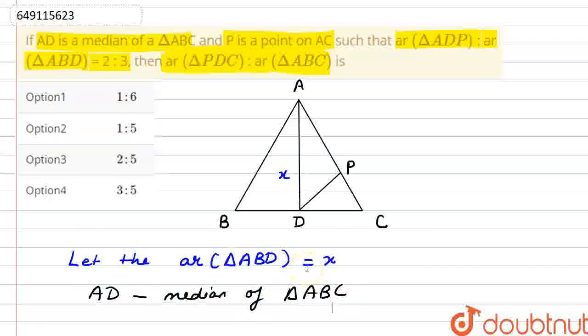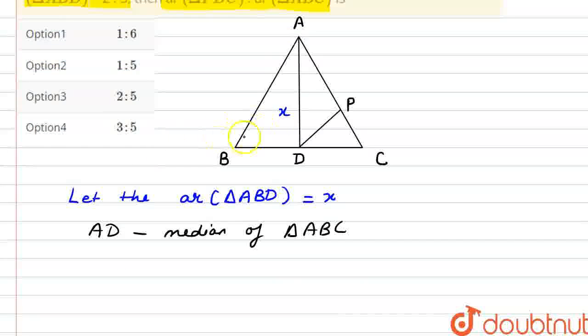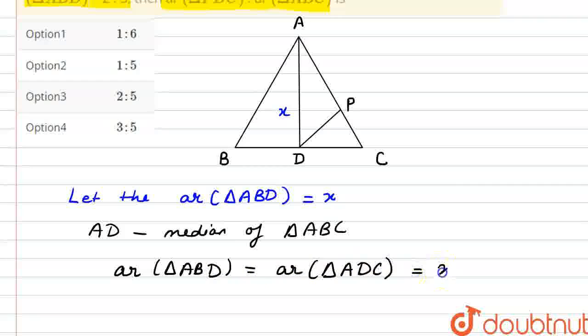If AD is the median, that means AD divides this triangle into two equal parts. That means the area of triangle ABD will be equal to the area of triangle ADC, which is X.